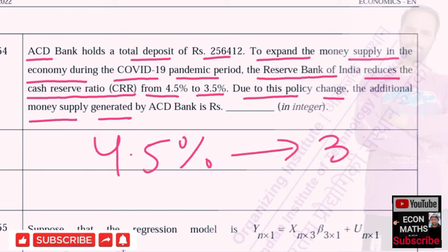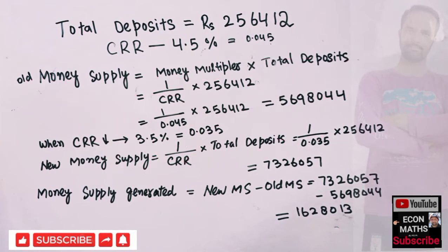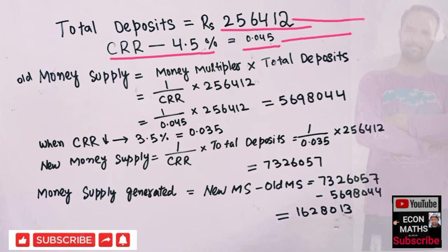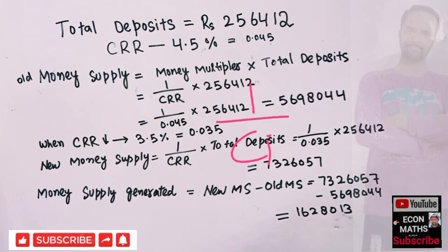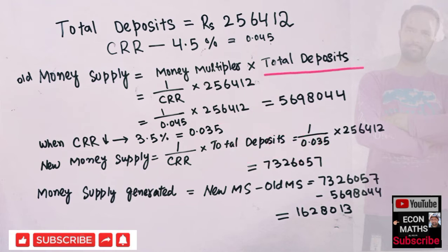So, we are given total deposit of 2 lakh 56,412. Originally, our CRR is 4.5 percent, which can be written as 0.045 in decimals. The money supply generated will be equal to the money multiplier times the total deposit. The money multiplier is given by 1 upon CRR — that is, 1 upon the Cash Reserve Ratio — times the total deposit.